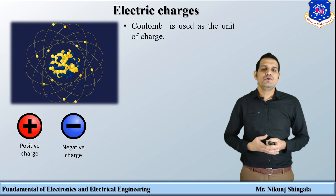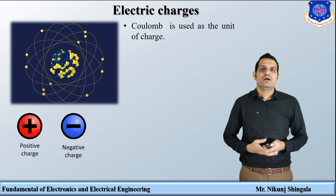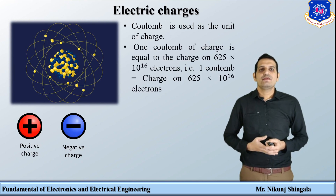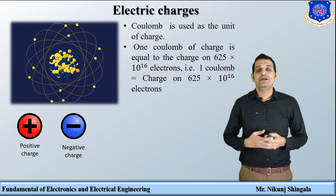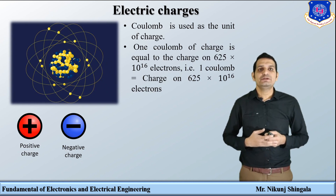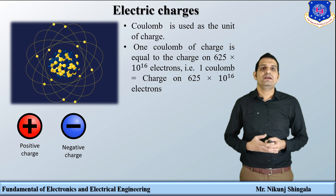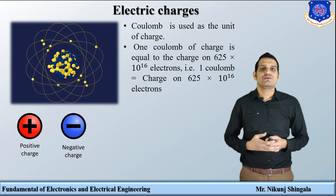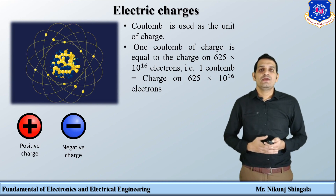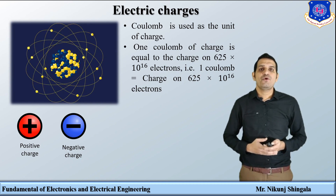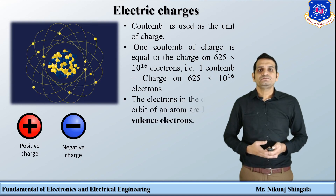The unit used for charge is the Coulomb. One Coulomb of charge is equal to the charge on 625 × 10¹⁶ electrons. So one Coulomb equals the charge on 625 × 10¹⁶ electrons, and the charge of an electron is −1.6 × 10⁻¹⁹ Coulomb.